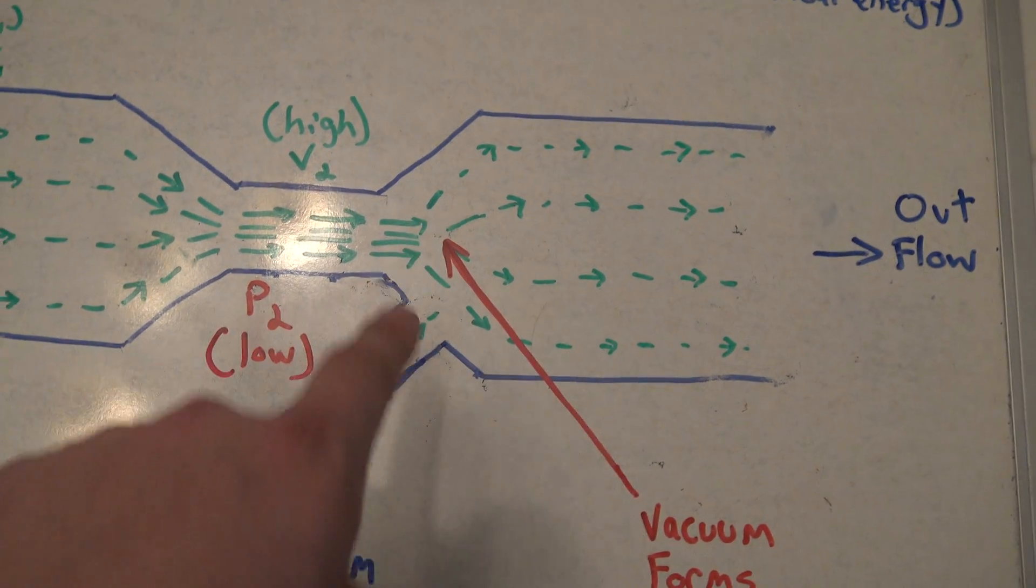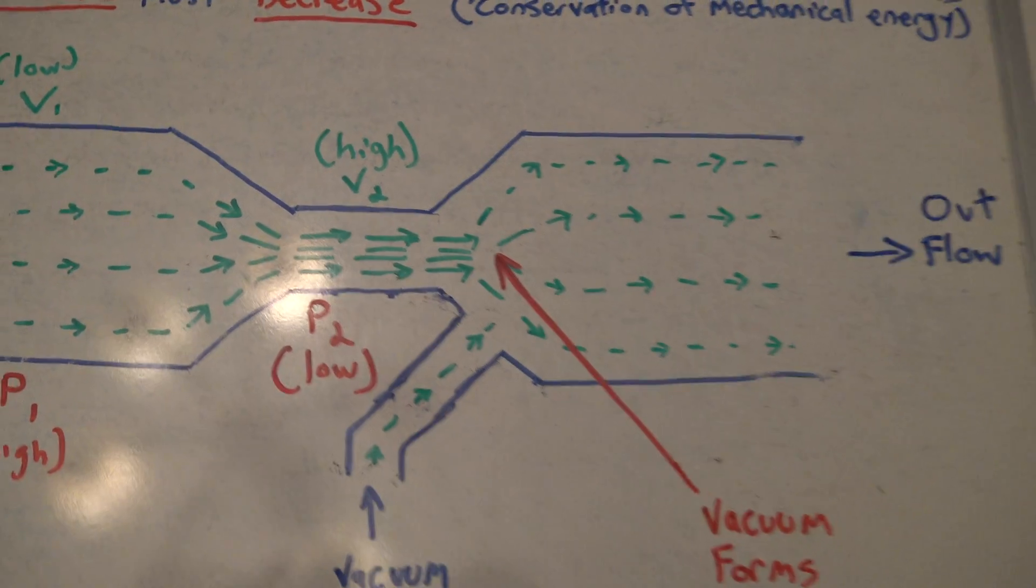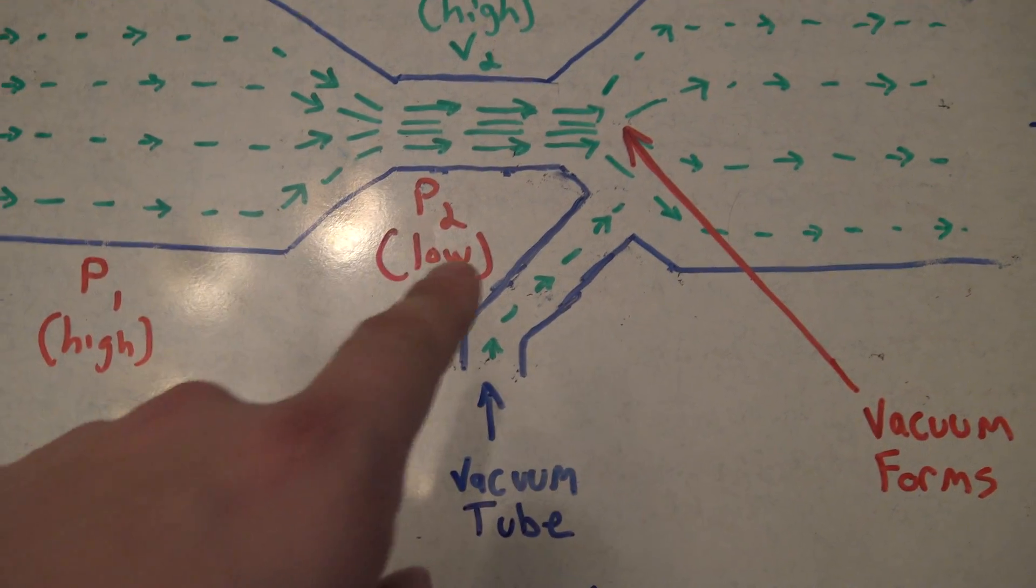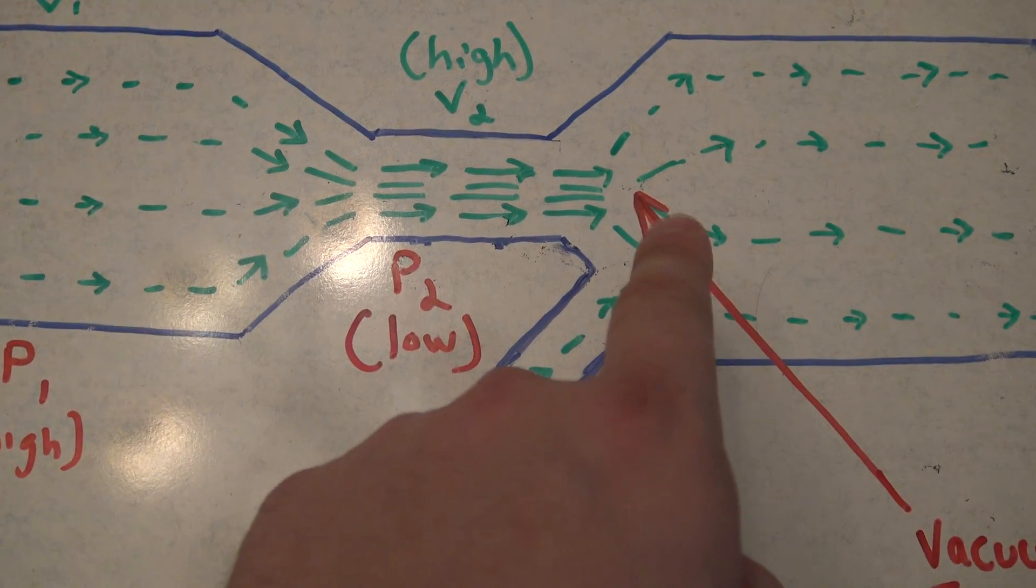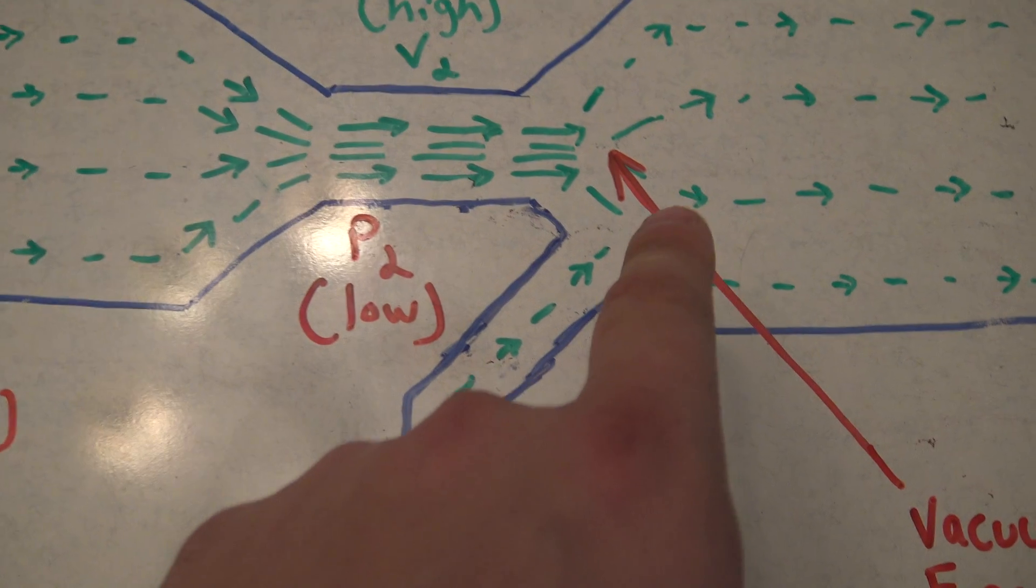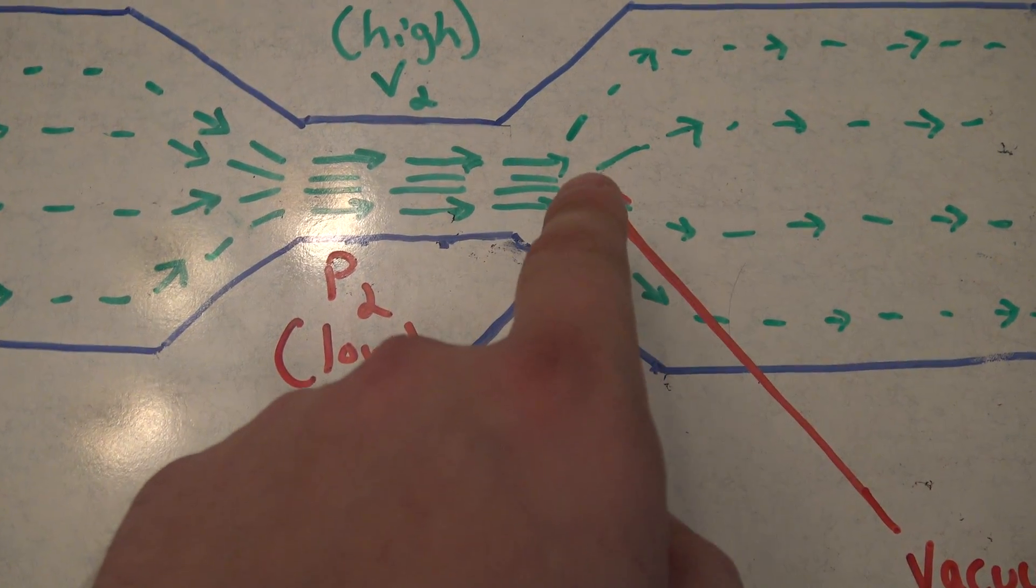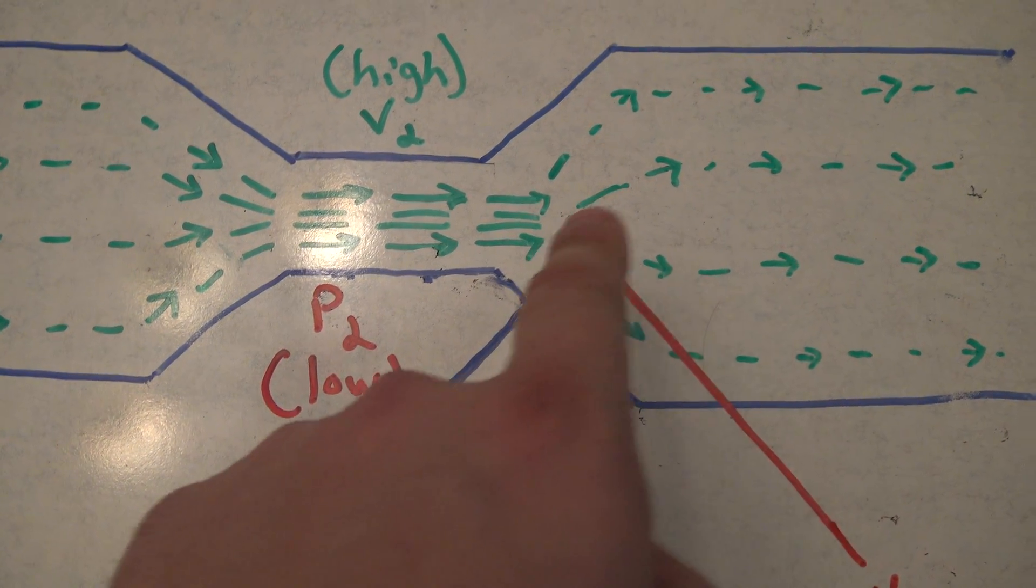This is where your vacuum forms, and this is where so many Venturis have really interesting principles. So at this point where you have an area of low pressure which is turning into an area of high pressure once again...